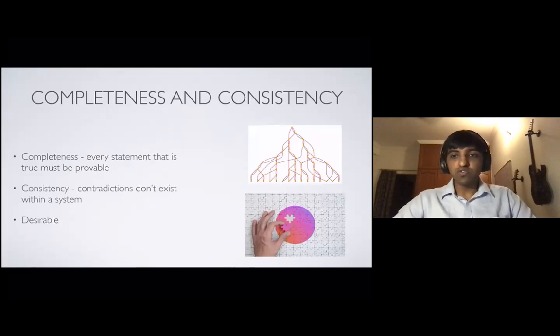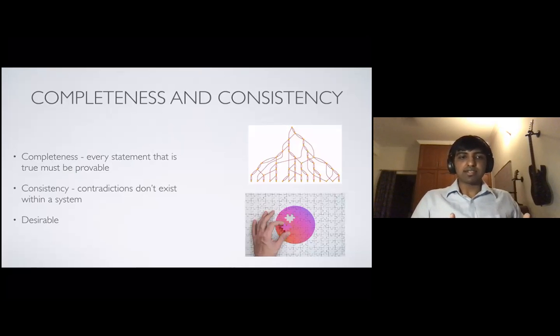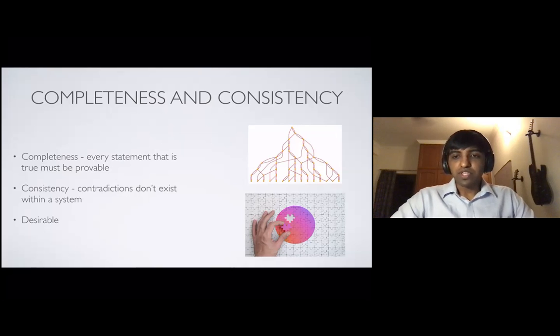So consistency is this idea that if you start from axioms and you make a deduction that A exists using those axioms, you show a proof of existence of A, you should not be able to show within that same mathematical system that not A is also true. So contradictions should not be existing in your system. In the same way, completeness is this property that every statement that we know that is true, we should be able to prove it. For example, Goldbach conjecture is a conjecture about numbers, which says that every even number greater than two is a sum of two prime numbers. So this statement is taken to be true, but the proof for this does not exist. But we believe that every statement that is true must be provable. And so these two things are desirable. You would like mathematics to be rigorous and consistent, and also describe your universe and your nature around you. So these two properties are desirable.